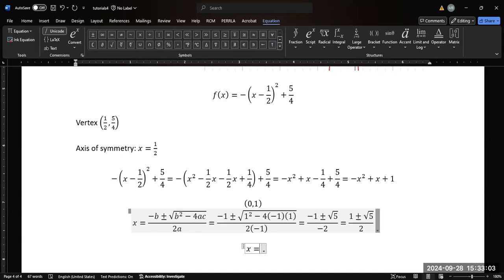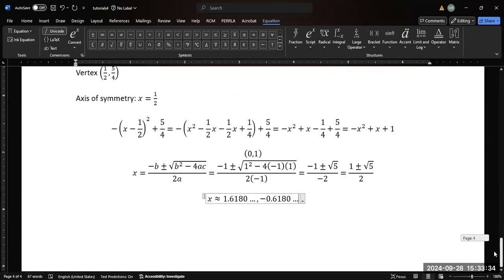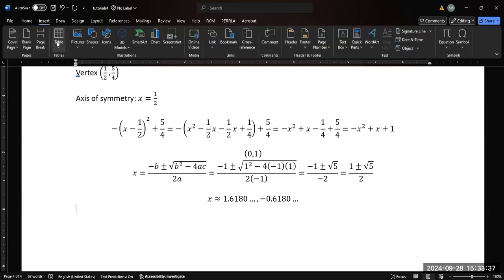And so we estimate these values by throwing them in the calculator. So 1 plus the square root of 5 divided by 2 is going to give me approximately 1.6180. And if I flip the minus sign, I get negative 0.6180. All right, so those are our points for the graph. So now let's sketch it.